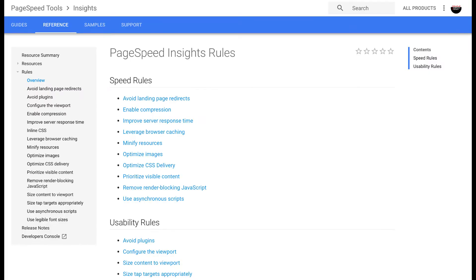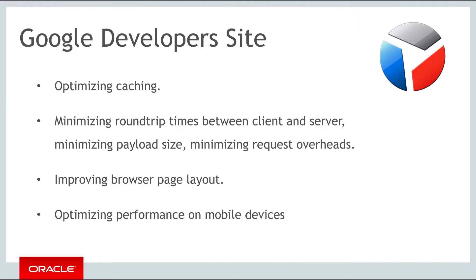There are many online resources that provide tips for performance optimization. For example, the Google Developers website describes processes for optimizing caching, optimizing round-trip times between the client and the server, minimizing the payload size — in other words, the download responses from cached pages — minimizing the request overhead, improving browser page layout, and optimizing performance on mobile devices, among a range of other tips and tricks.